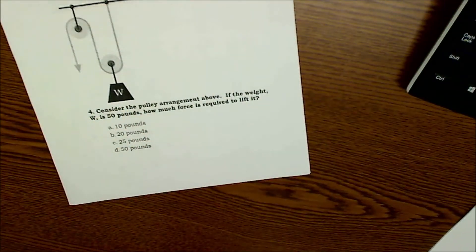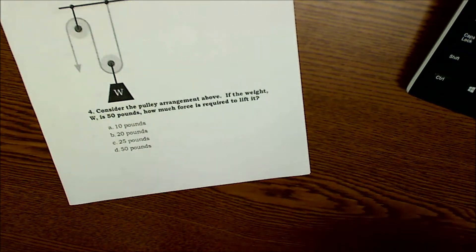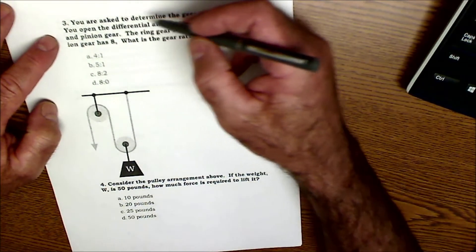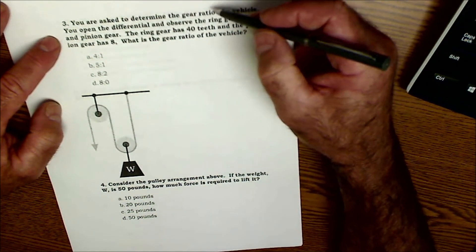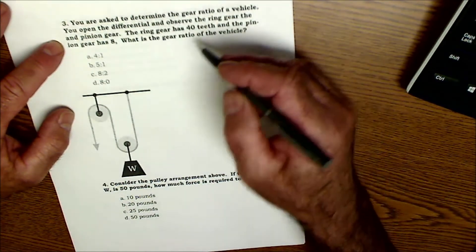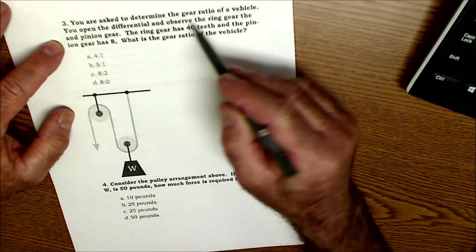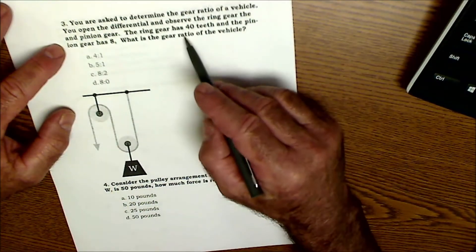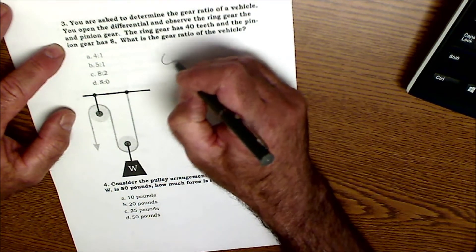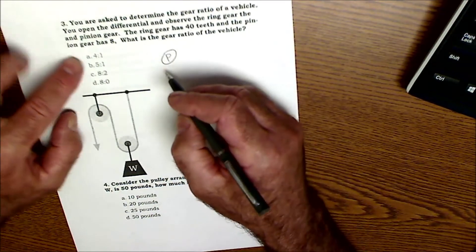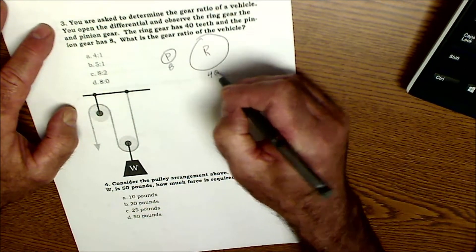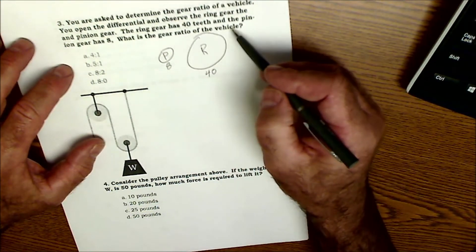Okay, problem number three. Again, pause the video and do the problem yourself. All right, you're asked to determine the gear ratio of a vehicle. You open up the differential and observe the ring gear and the pinion gear. Well, I don't think you're going to have to know what a differential looks like or a ring and pinion is because you have the two different gears, the number of teeth in them. I'm still going to draw a little picture. I know that pinion gear has eight teeth, and the larger ring gear has 40 teeth.